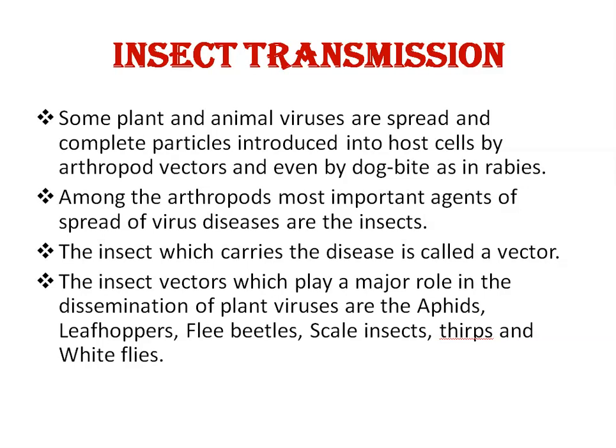Insect transmission: some plant and animal viruses are spread and complete particles introduced into host cells by arthropod vectors. Among the arthropods, the most important agents in the spread of virus diseases are insects. Insects which carry the disease are called vectors. Insect vectors which play a major role in the dissemination of plant viruses include aphids, leafhoppers, flea beetles, scale insects, and whiteflies.